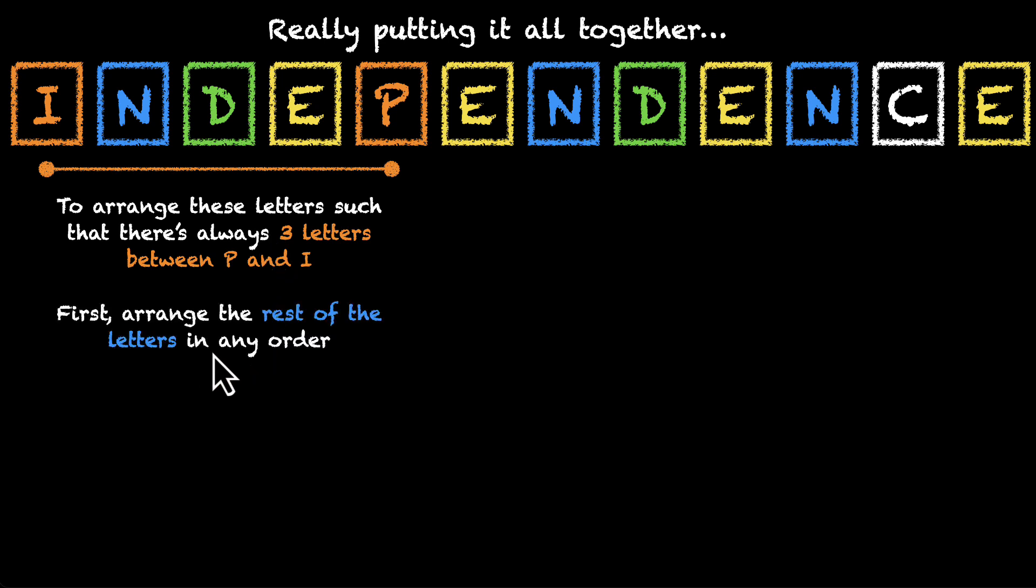The first thing that we can do is, we can arrange the rest of the letters in any order. But that's only part of the job. We have to do this, and we have to make some space for P and I. And even that is not enough. Once we have arranged the rest of the letters, and we have made some space, what we also need to do is, we have to add back P and I, which means we have to also let them switch between each other. And once all three of these tasks are done, we will have all possible arrangements where P and I have three letters between them. Alright, so let's do that.